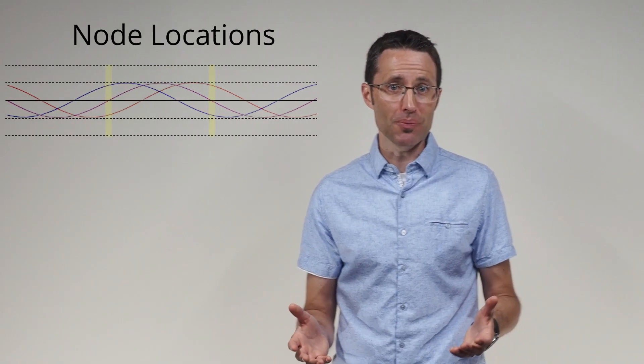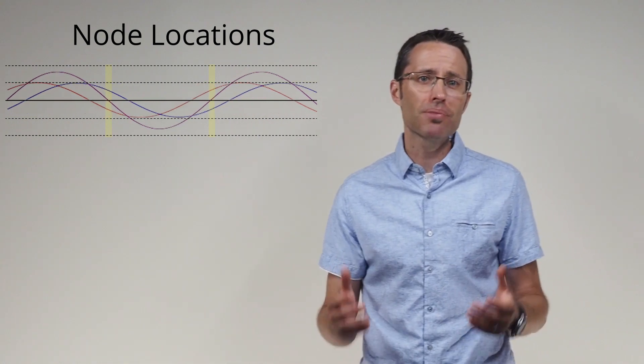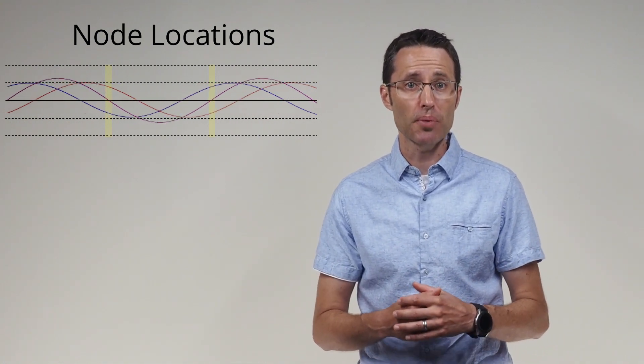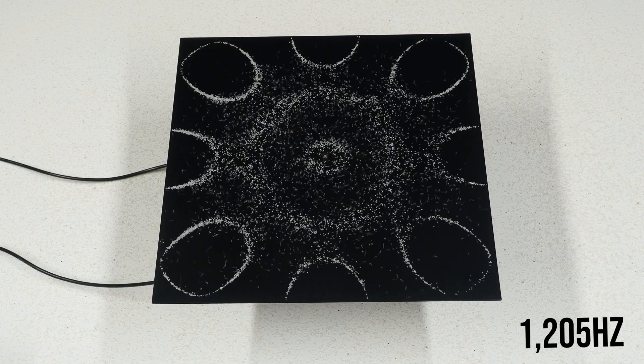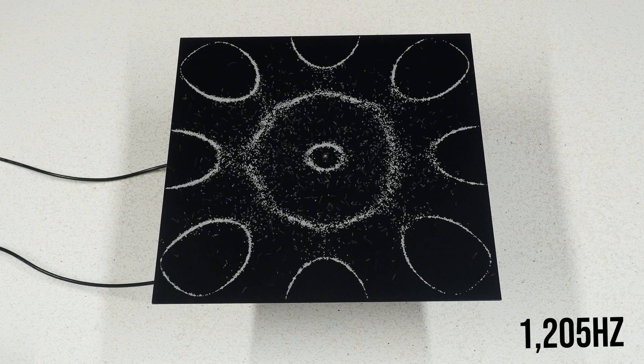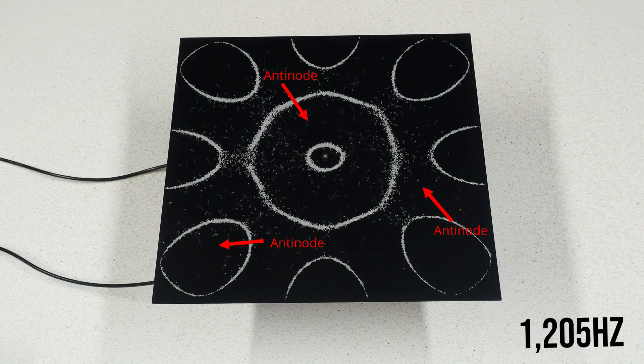There's no up and down displacement at the node locations because there's complete destructive interference between the periodic waves moving through the material. So when a standing wave is present at a particular frequency, the sand will move away from anti-nodes and settle at the nodes.